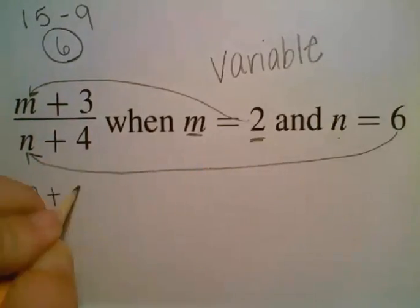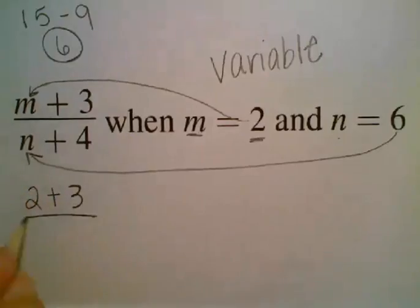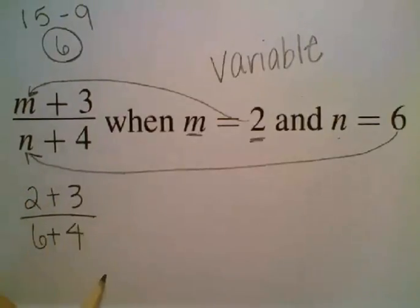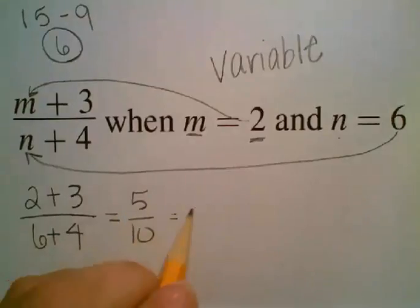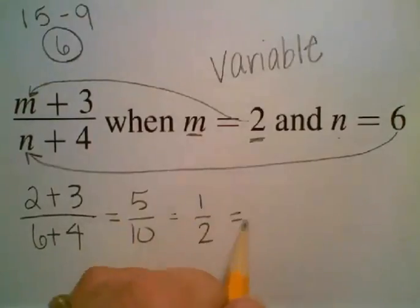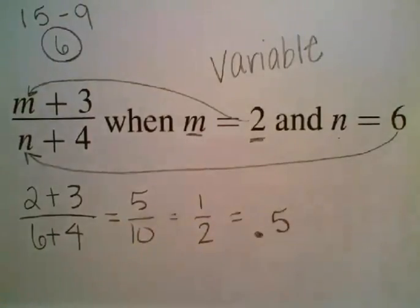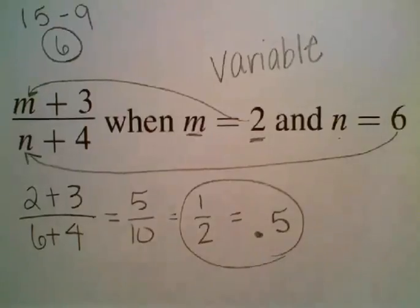So now we have 2 plus 3 over n is 6 plus 4. We're going to solve the top first and then the bottom and then divide at the very end. So we have 5 over 10 which gives us 1 half or 0.5. And those are your answers.